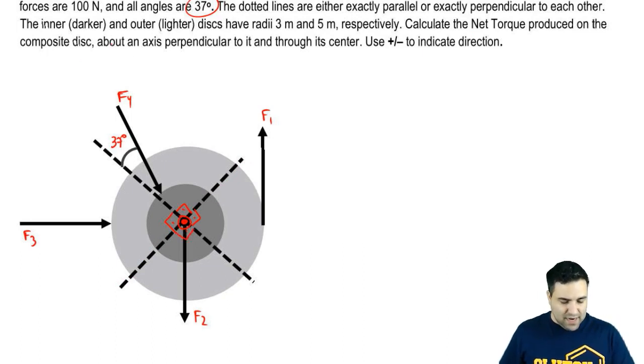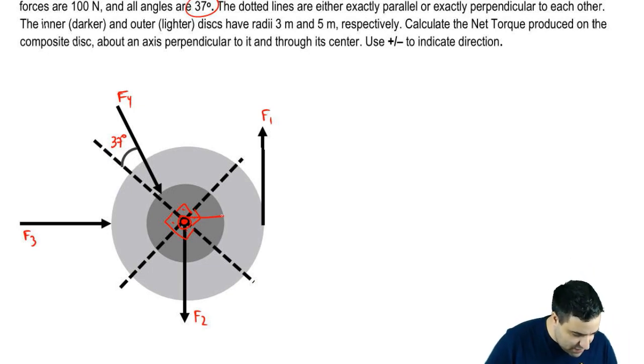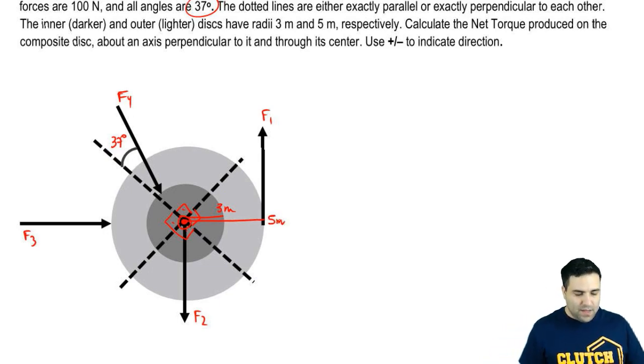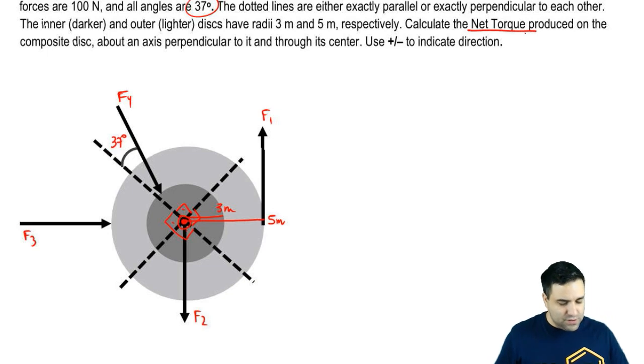Cool. The inner disk has a radius of three meters. What that means is that this distance here is three meters and the outer disk has a radius of five meters, which means that this line over here, this entire distance over here is five meters. Okay? We want to know the net torque produced on disk about its central axis and we're going to use plus or minus to indicate direction, clockwise, counterclockwise.